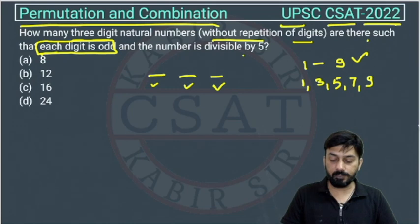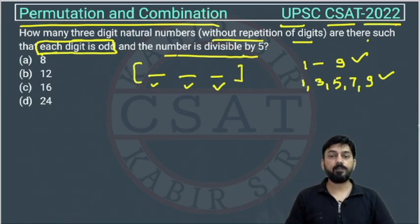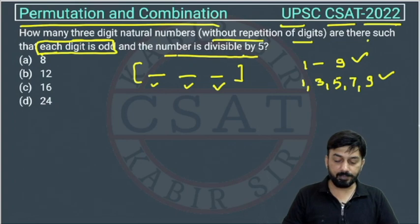One more condition is that the number is divisible by 5. From the divisibility rule in number system, the number will be divisible by 5 if the last digit is 5 or 0.